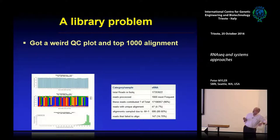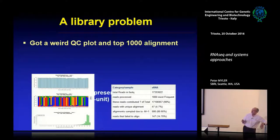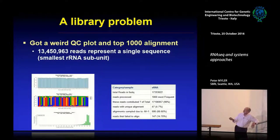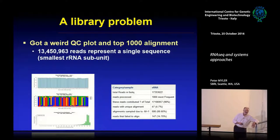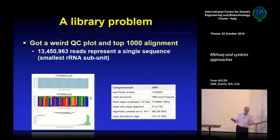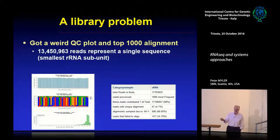Here's a case where the QC quality plot looked really good — quality scores up around 40 — but when you look at the base composition it's not random. In fact, you can actually read the sequence from the plot. Out of 17 million reads in this library, 13.5 million were exactly the same — a single sequence representing the small subunit of ribosomal RNA. We sequenced ribosomal RNA 13.5 million times because we didn't purify the RNA well enough. This would tell you not to continue processing this sample.